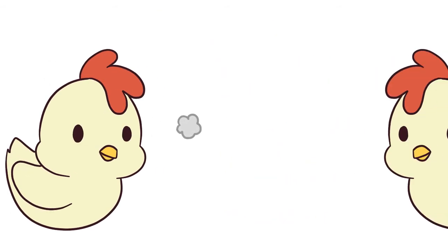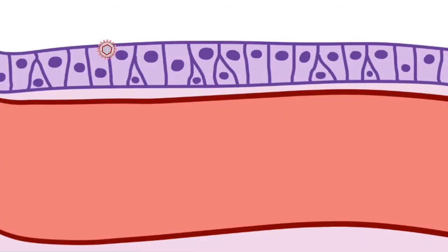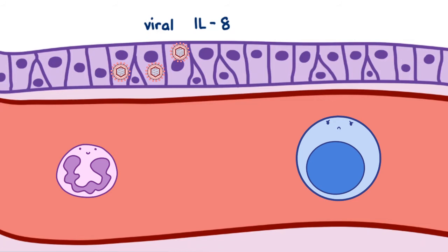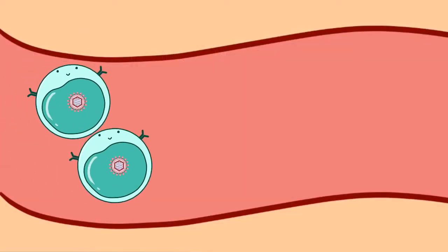When the virus is inhaled by the bird, it infects respiratory epithelial cells. Viral replication occurs locally and a viral immediate early gene is activated, producing viral interleukin-8, which is homologous to the host's own interleukin-8. An inflammatory response starts, attracting neutrophils and macrophages. This is where the virus takes the opportunity to infect macrophages, and eventually it will go on to infect B cells, which carry the virus around in the bloodstream — viremia.